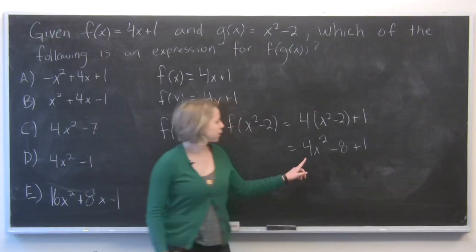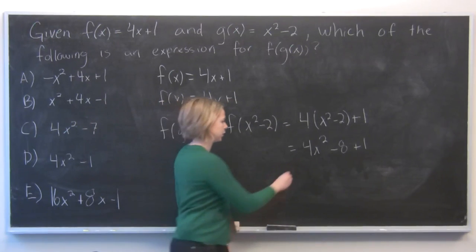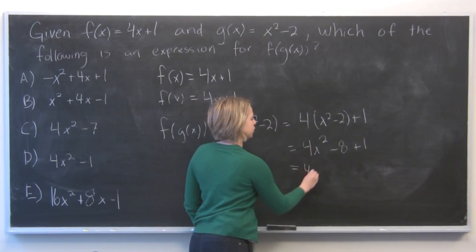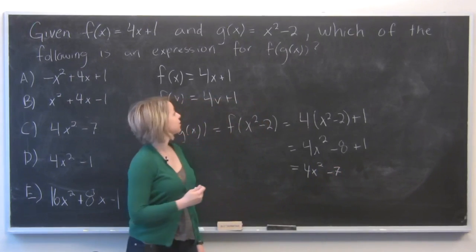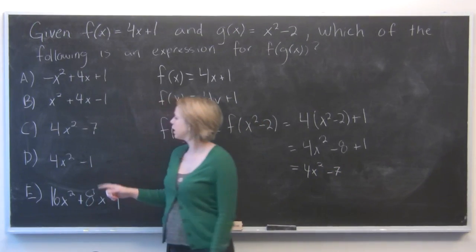So we're left with 4x squared minus 8 plus 1, which reduces to 4x squared minus 7, which is answer choice C.